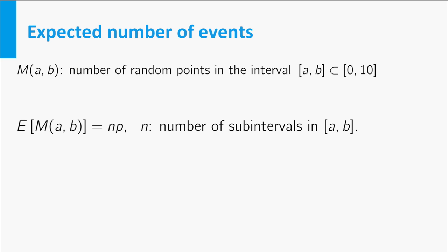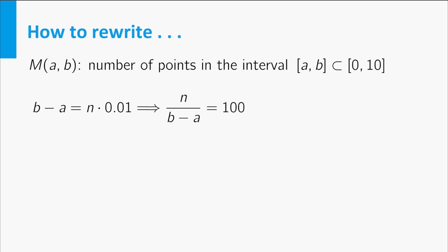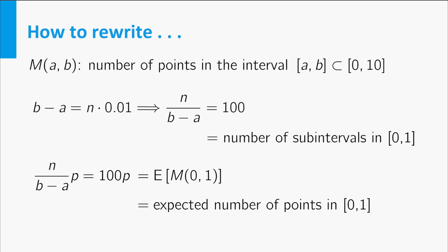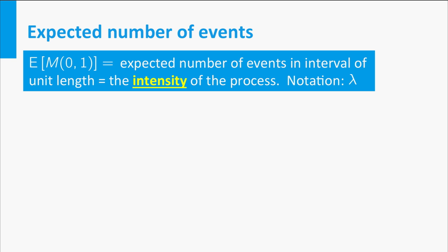This can be rewritten in a form with a special interpretation. Note that n divided by the length b minus a equals 100, which is exactly the number of subintervals in an interval of length 1. Multiplying this by p, we get the expected number of points in any interval of length 1. This number is called the intensity of the process, and is usually denoted by lambda.